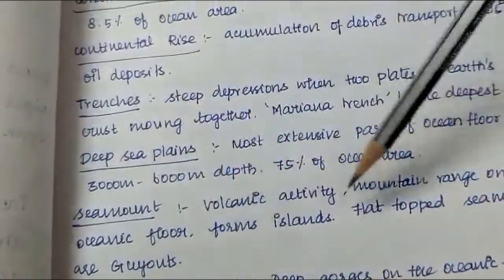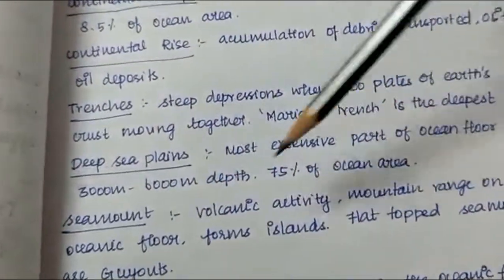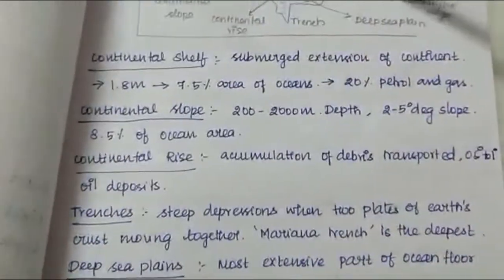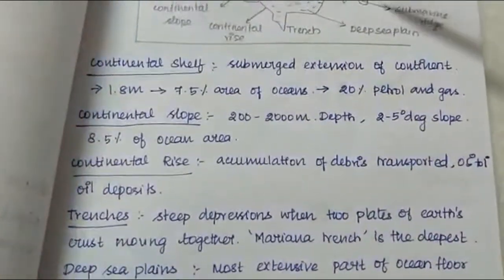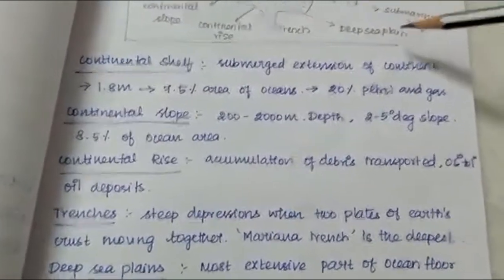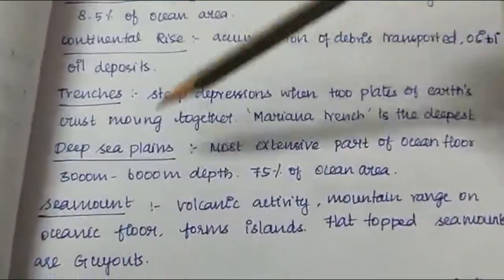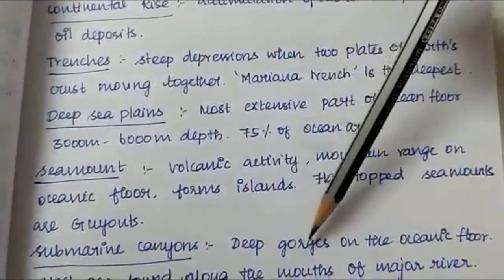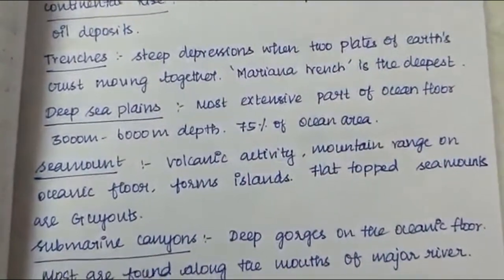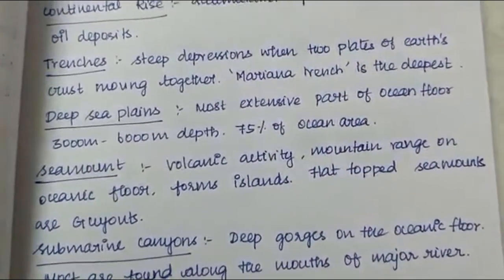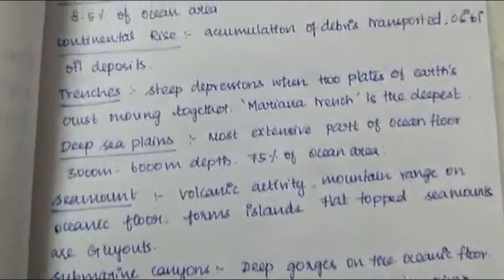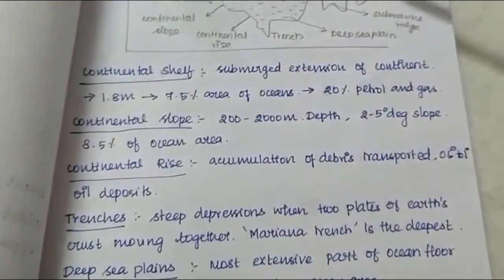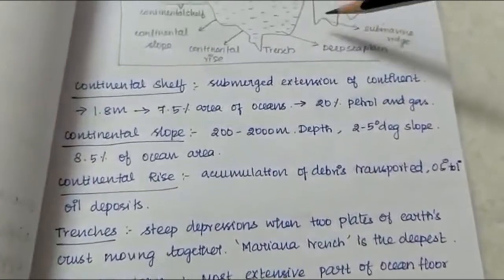This is the mountain range forming an island. This is the top of the island. This is the Submarine Ridge. This is the deep gorges in the ocean floor — these are the submarine canyons, which are major river features on the ocean floor.